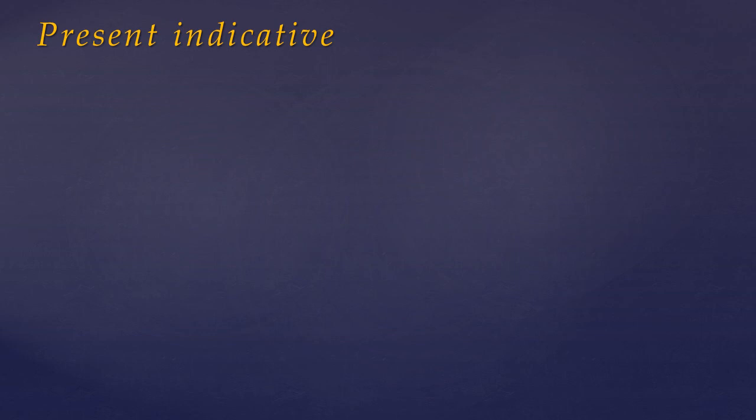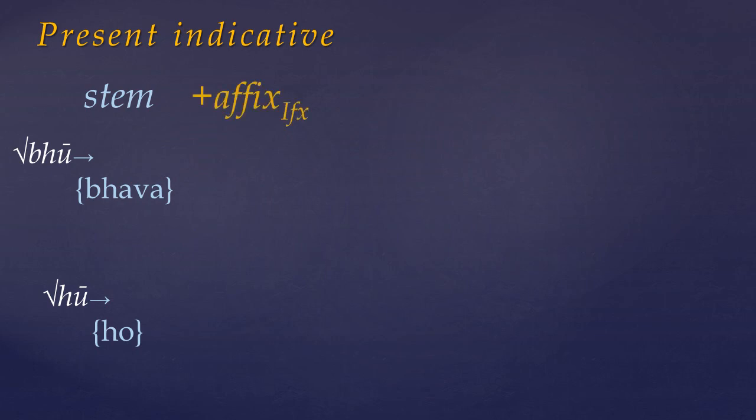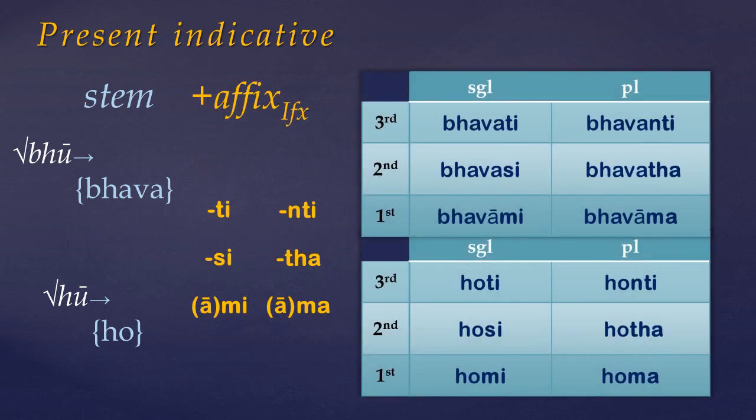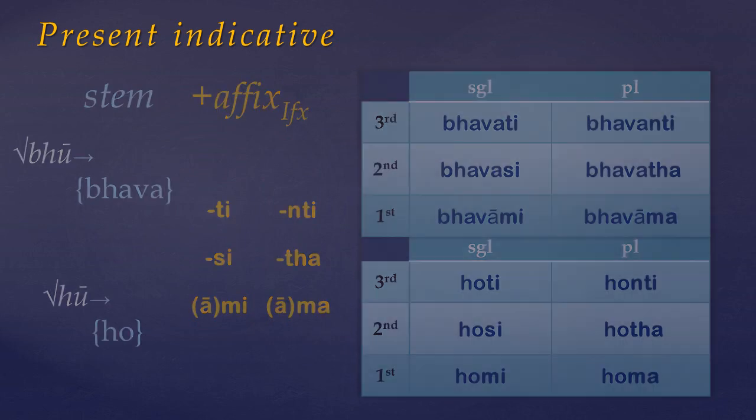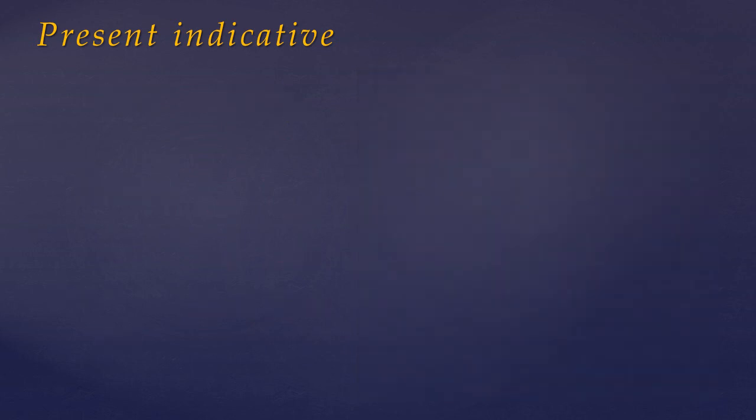What is important is knowing the difference between roots and stems, and recognizing the inflectional paradigms. So a present indicative verb is merely the combination of what's called the present stem, and the primary personal endings.